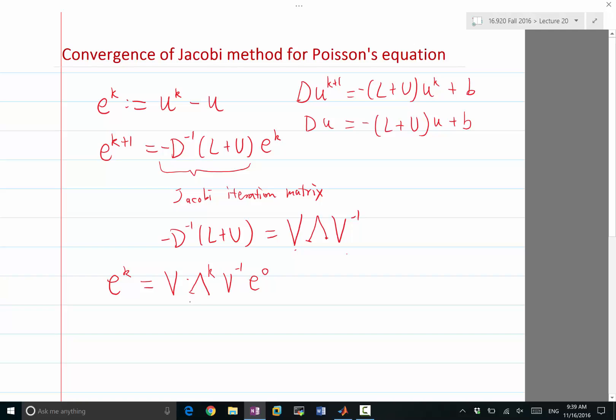We are going to see that whatever lambda is closest to 1 is going to converge the slowest. If there is a lambda that is equal to 1 or greater than 1, the iteration won't converge at all. If all of the lambdas are less than 1, then Jacobi is going to converge. And if there is even a single lambda that is very close to 1, then Jacobi would converge slowly.